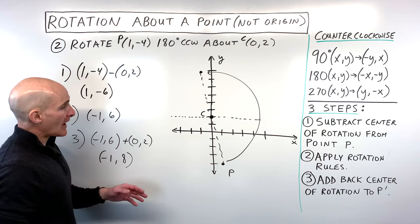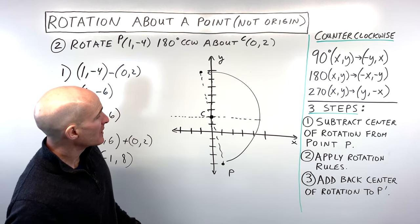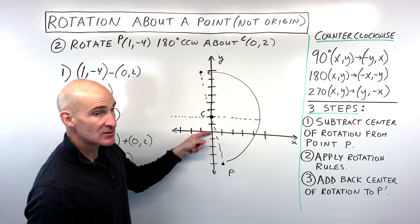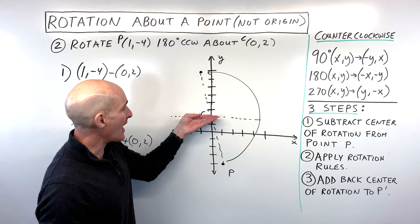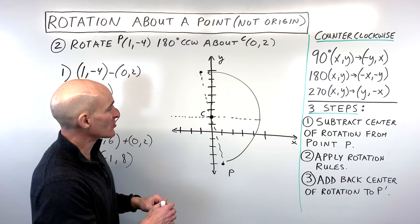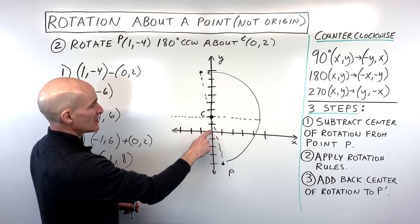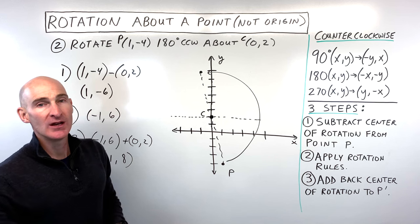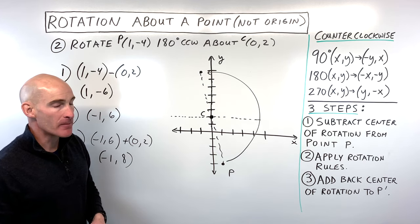Why are we adding back the center of rotation at the end? Remember, we originally subtracted it, which brought this point to the origin. When we add it back, we're returning it to where we started — it's like a translation, sliding everything back up to the final position.